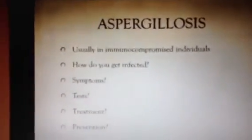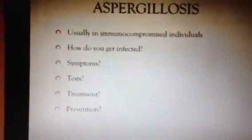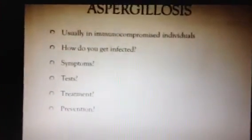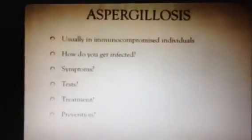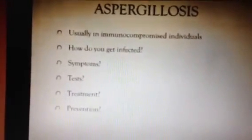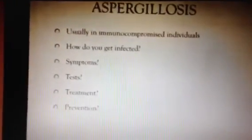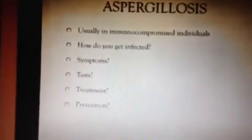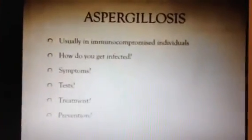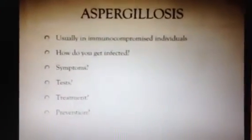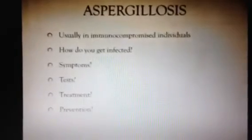Treatment involves several weeks of an antifungal drug, such as voriconazole or itraconazole. People can also be taken off immunosuppressant drugs to allow their immune system to better handle the infection. Surgery is a final option, though it is difficult for both the patient and the doctor. Prevention is difficult since the spore is found just about everywhere. People with weakened immune systems should avoid dusty environments and yard work, and can use filters and protective masks when possible.